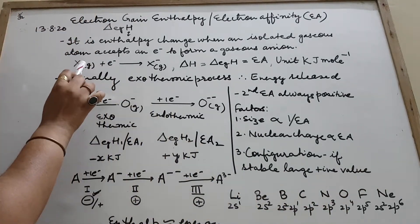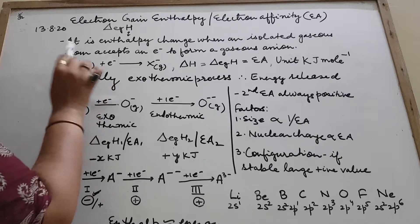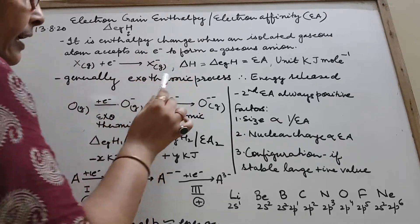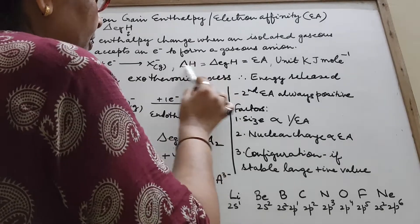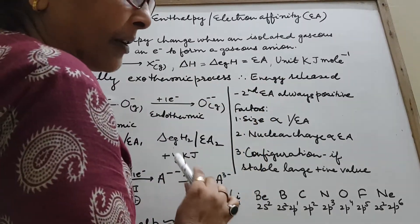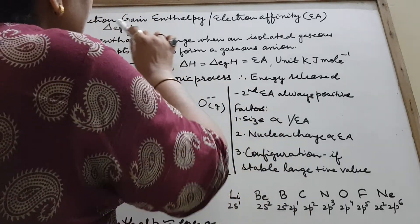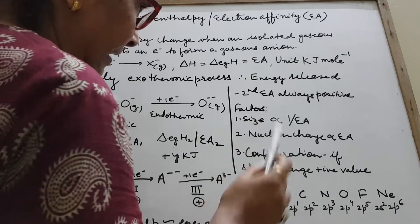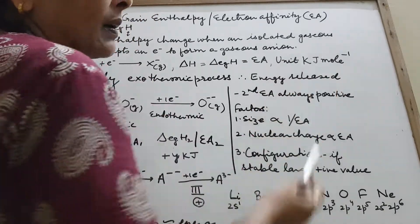In other words, during the process of addition of an electron to an isolated gaseous atom and converting it to an anion, the energy change that takes place is called electron affinity — precisely, electron gain enthalpy. The name itself is self-indicating. The unit is kilojoule per mole.